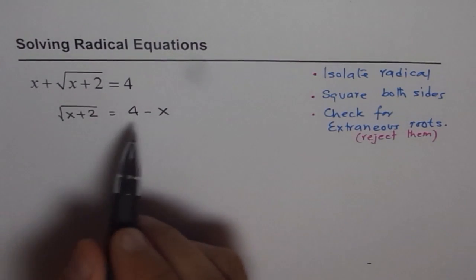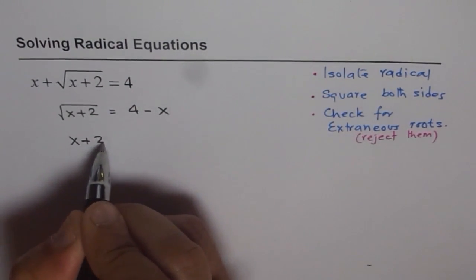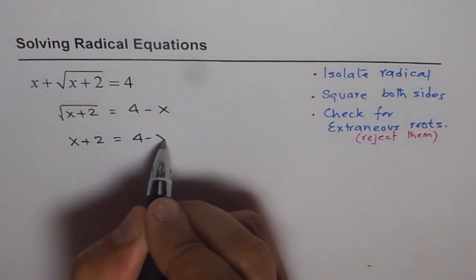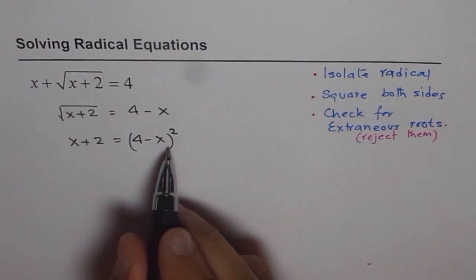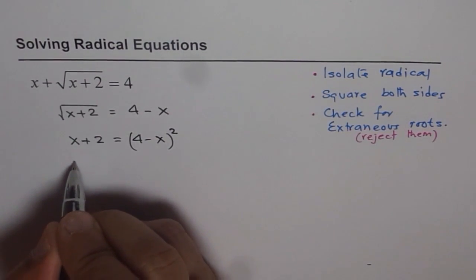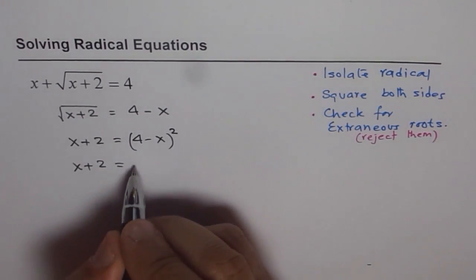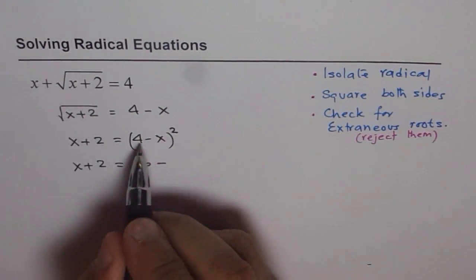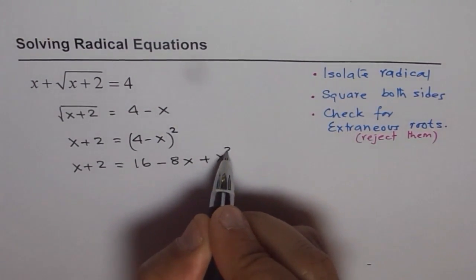Now, we can square both sides. So, when you square both sides, you get x plus 2 equals to 4 minus x whole square. Now, this can be expanded and then we can solve. So, we have x plus 2 equals to 4 minus x whole square is 4 square which is 16 minus 2ab which is 8x plus x square.